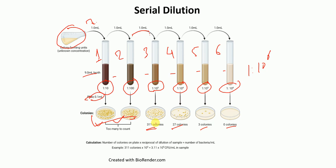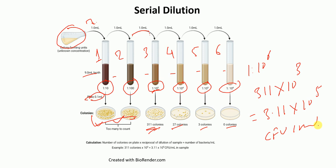Now let's make the calculation for tube number 3. We see 311 colonies, and the dilution corresponding to this is 1 to 10 to the power 3. That means 311 will be multiplied by 10 to the power 3, and hence we will get 3.11 × 10⁵ colony forming units per ml. So the number of bacteria for this dilution is 3.11 × 10⁵ CFU/ml.